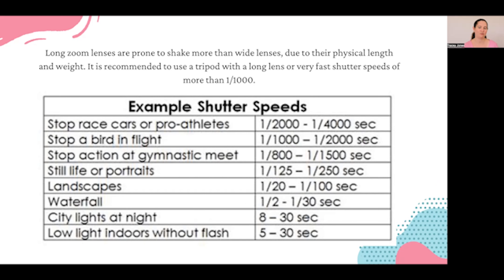If you're wanting to stop race cars or athletes in their tracks, you're going to want to use very fast shutter speeds of 1/2000 or higher — it depends on how fast they are moving. For birds in flight, you're again going to want something faster than 1/1000 of a second.